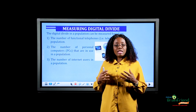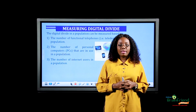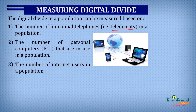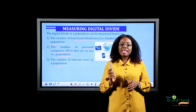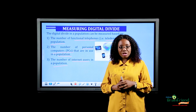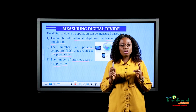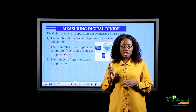In a society, there are different ways of measuring digital divide. These include teledensity, which refers to the number of functional telephones in a population; the number of personal computers in use in a population; and the number of internet users in a population. As you can see, the measurement of digital divide is centered around the use of digital technologies. Now let's proceed by looking at two very important terms associated with digital divide.